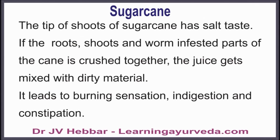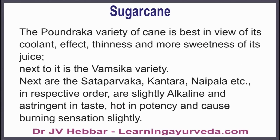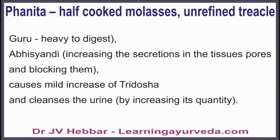The tip of shoots of sugar cane has a salty taste. If the roots, shoots, and worm-infested parts of the cane are crushed together, the juice gets mixed with dirty material, leading to burning sensation, indigestion, and constipation. The Pounderka variety of cane is best in view of its coolant effect, thinness, and more sweetness of its juice. Next to it is the Omshika variety. Fanita, or half-cooked molasses, is heavy to digest, increases secretions in tissue pores, causes mild increase of doshas, and cleanses urine.